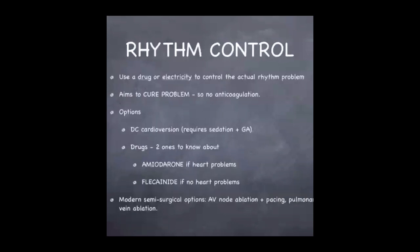When we think about rhythm control, instead of just controlling the rate, we try to cure the problem using drug or electricity to actually restore normal rhythm. Because we control the problem, there is no need — at least after it's controlled — for anticoagulation. Options include DC cardioversion, which involves shocking the patient and always requires sedation and possibly a general anaesthetic. Drug options include amiodarone, most commonly used in patients known to have heart problems, and flecainide, commonly used in young patients with no heart problems. Modern surgical options include AV node ablation with pacemaking, or pulmonary vein ablation.